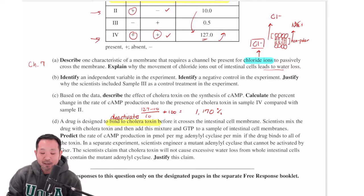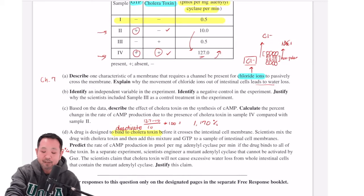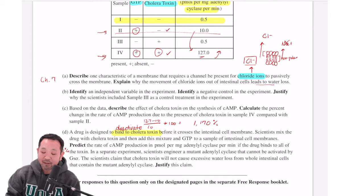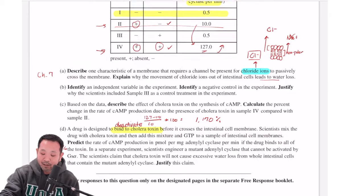So if the drug binds to 100% of the toxin, then it may as well not even be there. So then we channel this sample to yet again and say, look, in the absence of cholera toxin, which is exactly what's happening now, what would the rate be? And that would be 10 picomoles per milligram of adenocytate per minute, and that will be good enough.